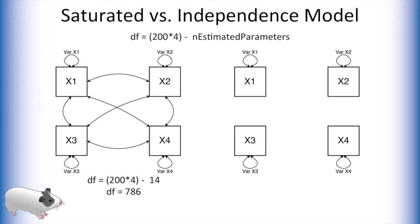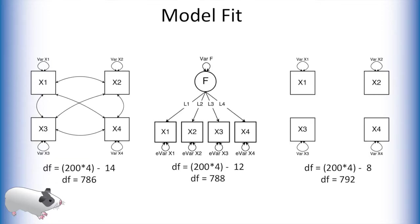The saturated model has four variance paths, six covariance paths, and four means paths that are not shown here. Thus, the model has 786 degrees of freedom. The independence model has six fewer paths, and thus has more degrees of freedom than the saturated model. Any factor model that we make to explain the covariation between these variables should then be somewhere in between. Indeed, the factor model we made in the previous video has degrees of freedom between the saturated and independence model.